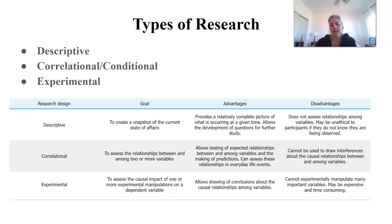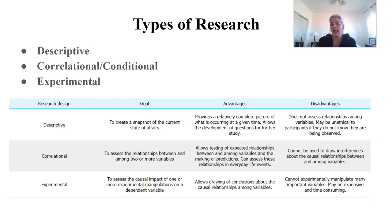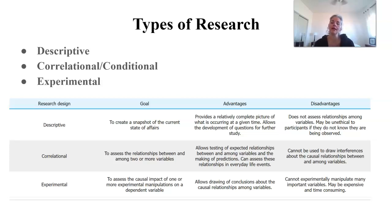Let's talk about different types of research. Hopefully you've already taken intro psychology or a social science course. There's non-experimental research — including descriptive research like case studies or surveys — and correlational research, which looks at the relationship between two variables. Then there's experimental research, where we manipulate one variable and measure the outcome across different groups. These are very different research designs with different structures and conclusions. Importantly, correlation is not causation — only experiments allow us to say that A caused B, due to careful control and manipulation.